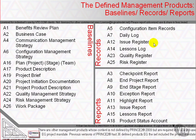So for example, the configuration item records record the status of the project's products. For example, our bakery's mixing machine may be purchased, then received, then awaiting installation.